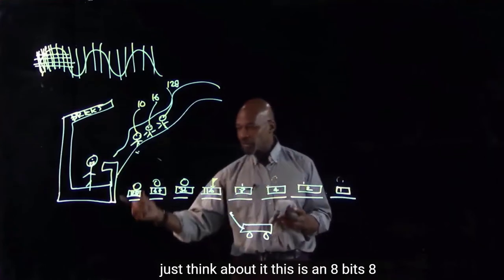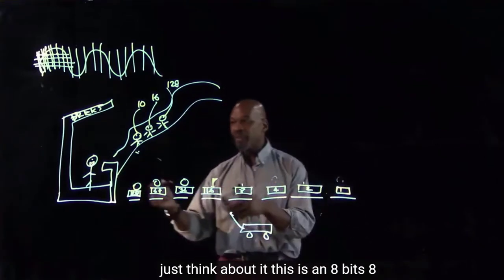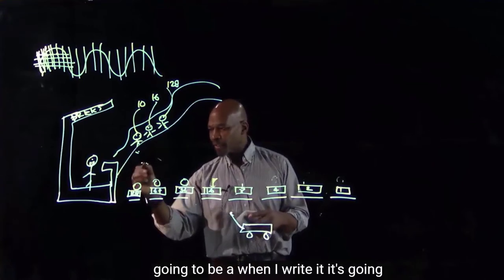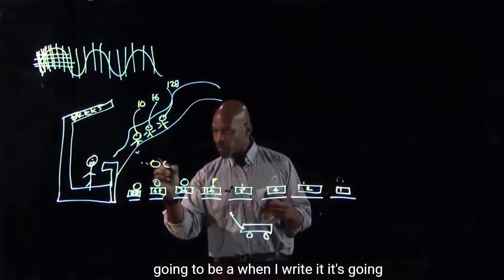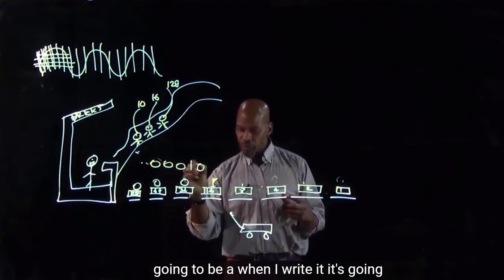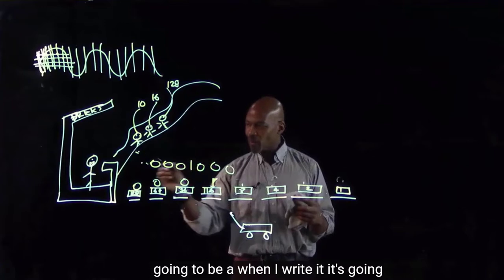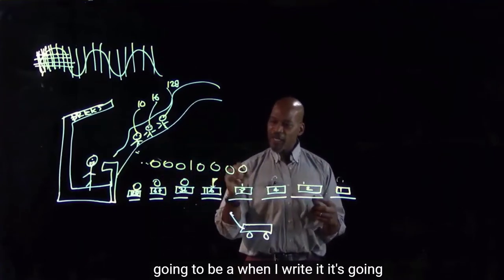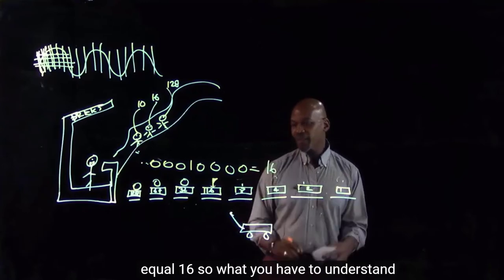A representative of binary. Think about it — this is an eight-bit number. So when I write it, it's going to be: zero, zero, zero, one, zero, zero, zero, one — that's positions one through eight. Which equals 16.